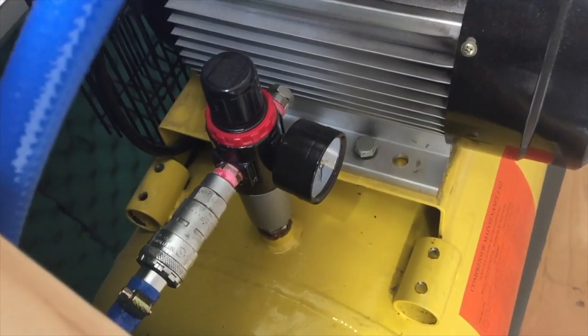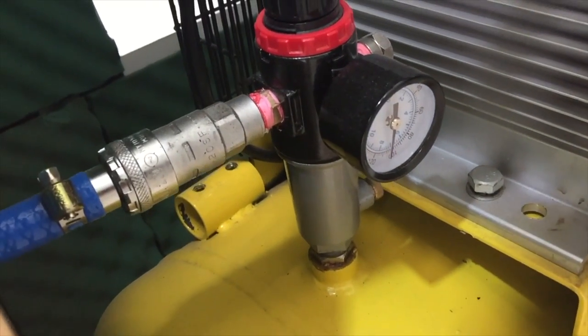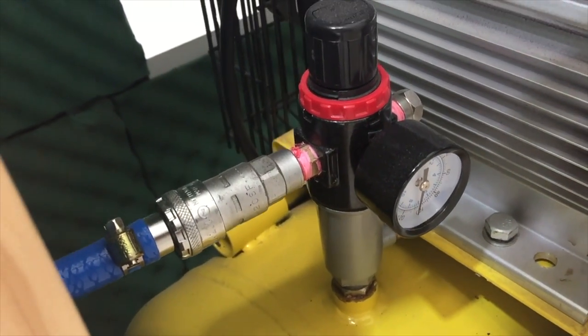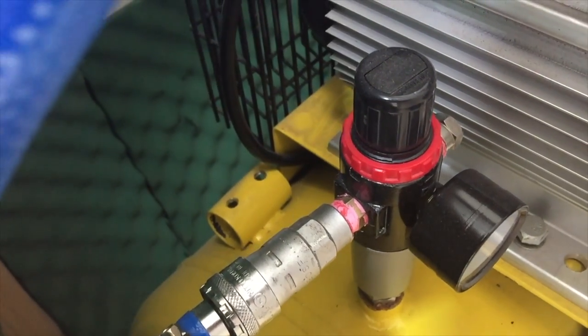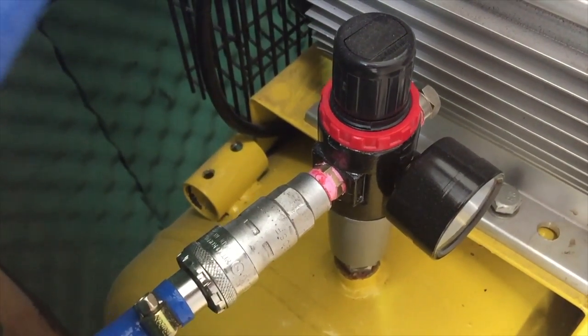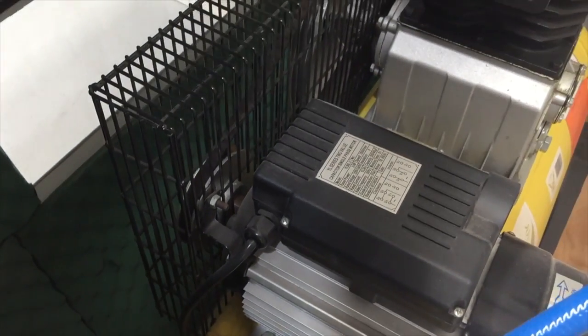And we run straight out of the compressor into the airline there. We've got some quick connect fittings by Anastar. And you can also see that little bit of green in the background there, that padding. That's just a bit of soundproofing that we put on there.